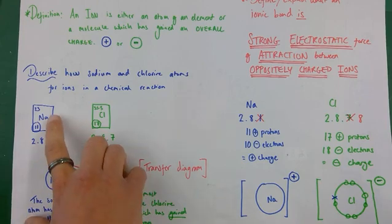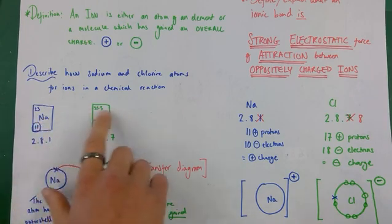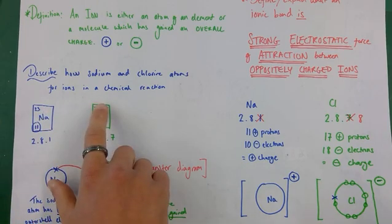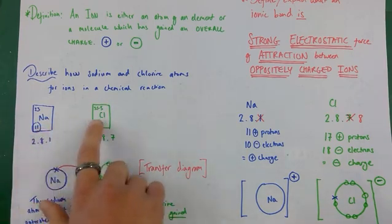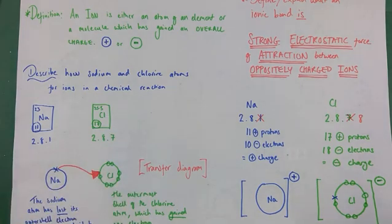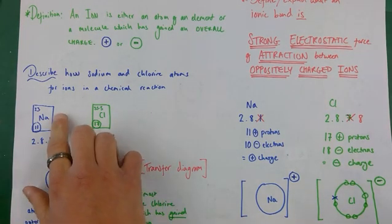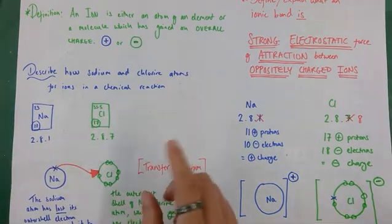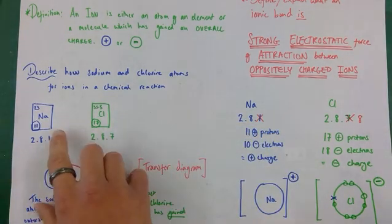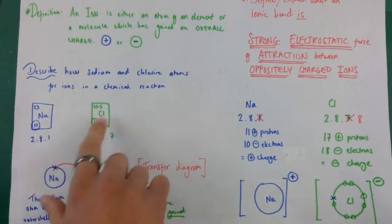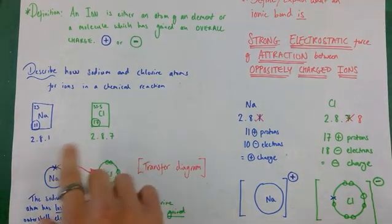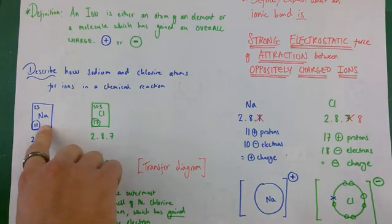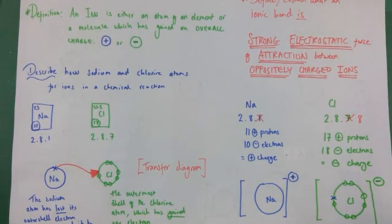Here's a good example: sodium and chlorine. I've written down the symbols from the periodic table - we've got the mass number above and the atomic number below. We're going to focus on the atomic number because it helps us work out the number of electrons in different shells. By definition, an atom is electronically neutral and has an equal number of protons and electrons, so the atomic number tells us the number of protons - and therefore electrons - which are 11 and 17 for these two elements.